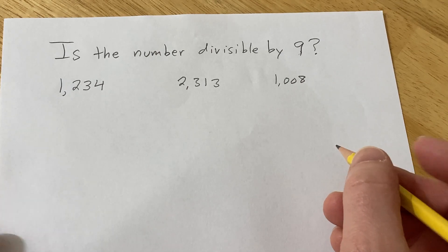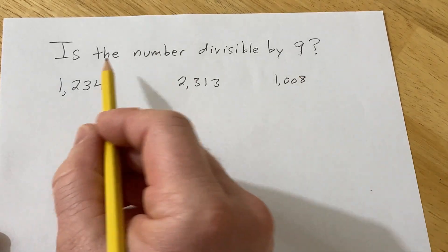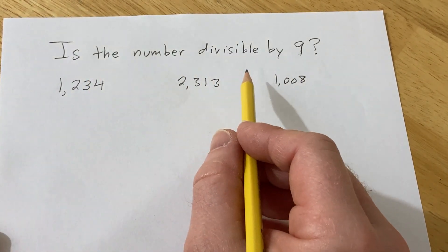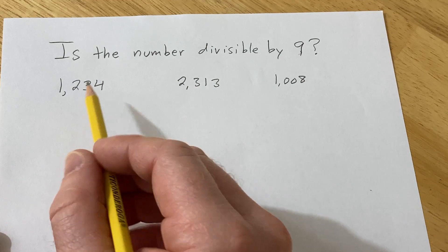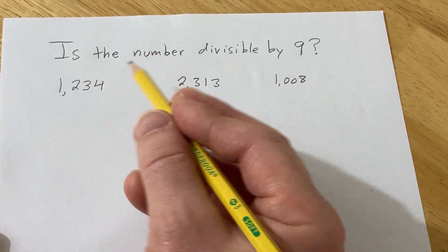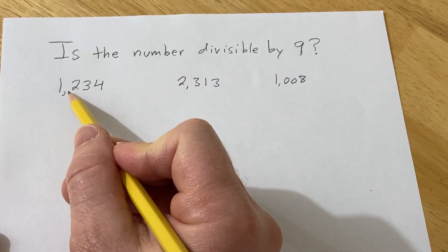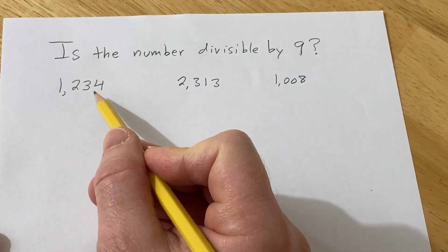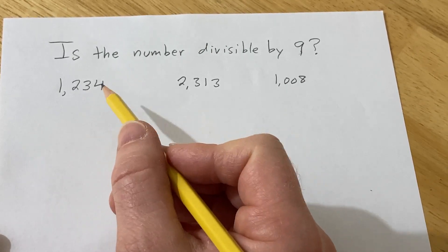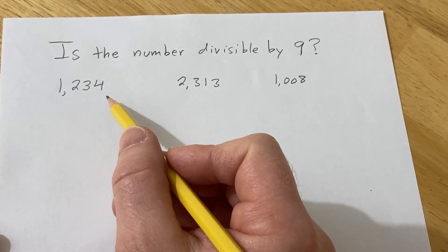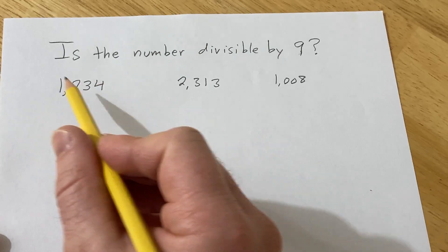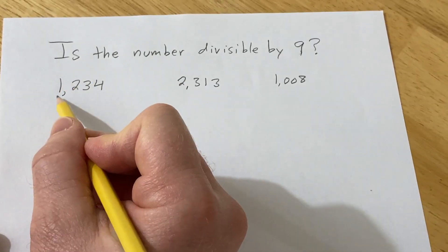Hi, in this video we are going to answer the question: is a number divisible by 9? To figure out if a number is divisible by 9, all you have to do is add the digits and determine if the sum of the digits is divisible by 9. If the sum is divisible by 9, the original number is too. Let me show you.